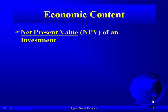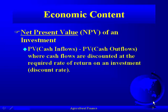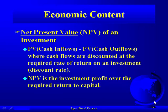Another definition is the net present value. The net present value of an investment is the present value of the cash inflows — any money we receive from this contract — minus the present value of cash outflows — any money we pay out — where the cash flows are discounted at the required rate of return, or discount rate. The net present value can be thought of as the investment profit over the required return to capital. If there's a positive net present value and your discount rate is 10%, you not only earn 10%, you actually earn some extra profit over and above that required return.